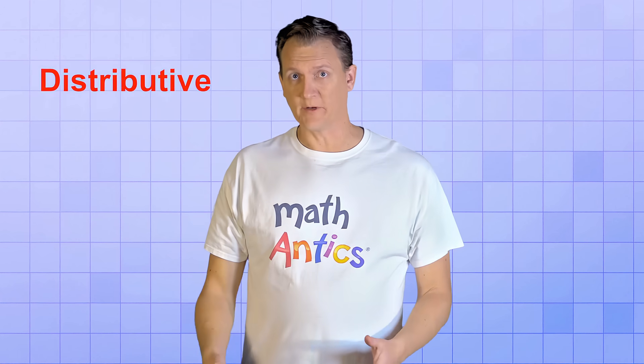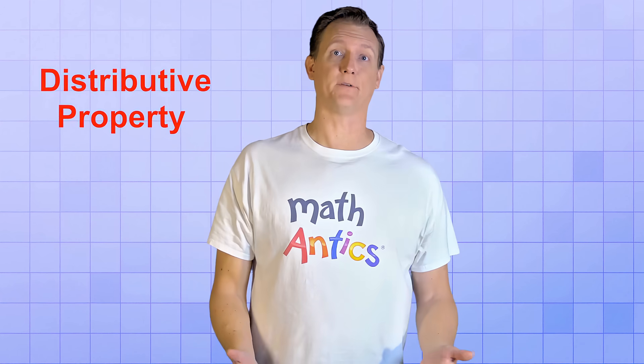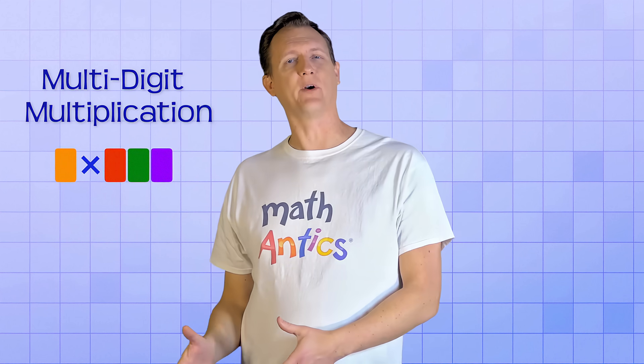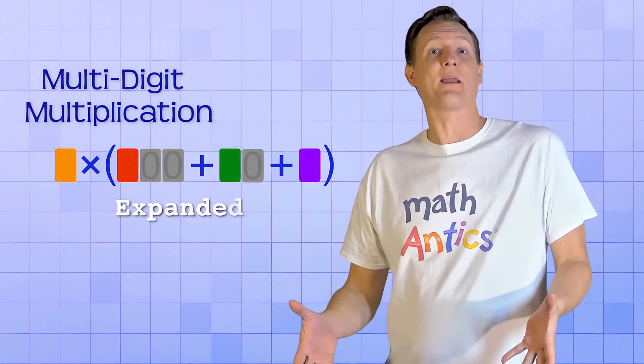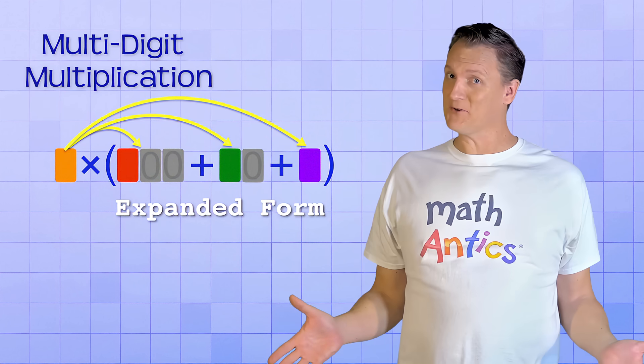Realizing that the Distributive Property can make some calculations easier to do mentally can come in really handy for certain basic multi-digit multiplication problems. That's because you can break up the multi-digit factor into a group sum, you know, like expanded form, and then distribute the other factor to the members of that group.